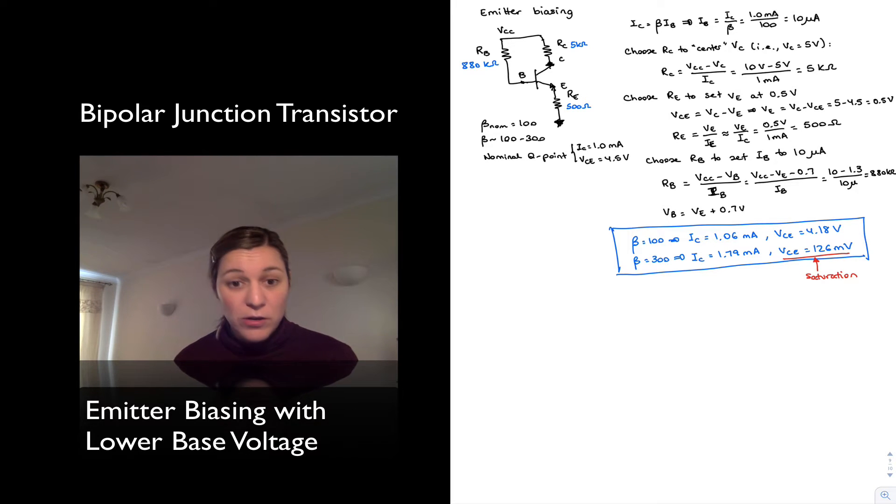In the prior configuration we saw in the previous video, we had the base terminal tied to Vcc through a base resistor. Now we're going to lower the base voltage. Instead of tying it to Vcc, we're going to tie it to some other lower voltage.